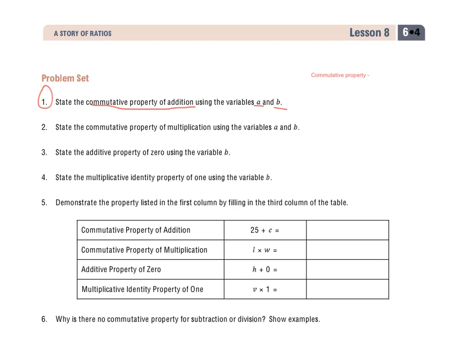addition, and I would say multiplication, states that the order in which I add or multiply will not change my sum or product. I kind of lumped both of them into one there, but I would separate those out. The commutative property of addition means the order in which I add two numbers or variables will not change the sum.